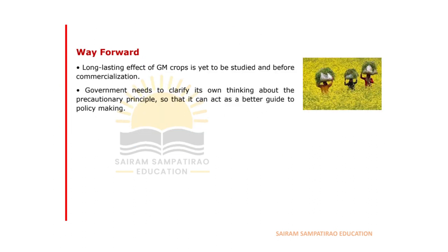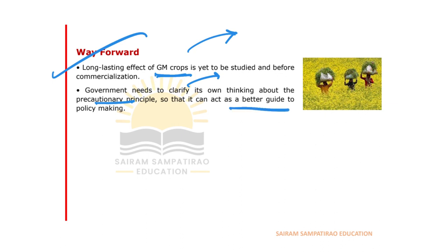The way forward for GM crops: these crops have long-lasting effects and need to be studied further before commercialization, as environmentalists have raised many concerns about health and farmer benefits. Destroying agriculture would destroy the entire economic fabric of India, so we must be cautious. The government needs to undertake research and development, clarify its thinking on the precautionary principle, and guide better policy-making toward a sustainable India.